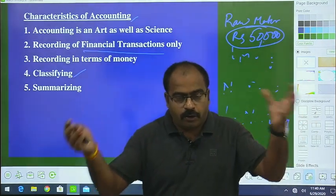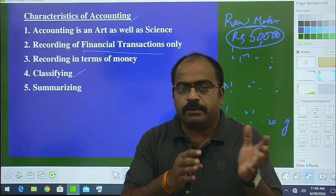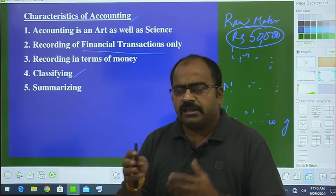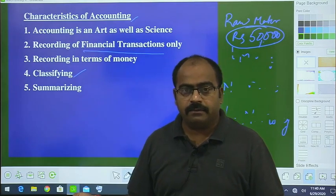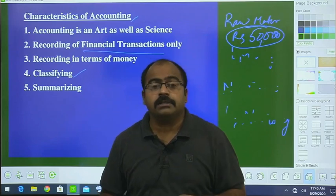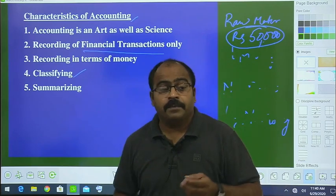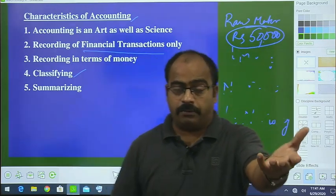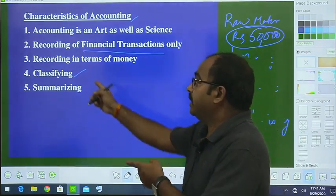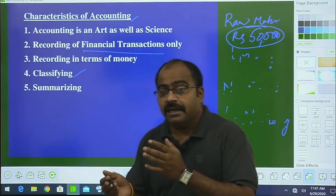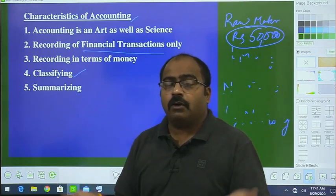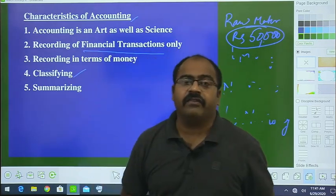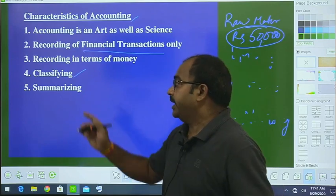Suppose we have a thousand workers. We are paying wages and salary. For classifying, imagine you have many colored balls — red, green, yellow, pink — and you separate them. That means we transfer items into different heads. Money incoming or outgoing — is it an expense or income? So showing it under expense or income heads is what we call classifying.